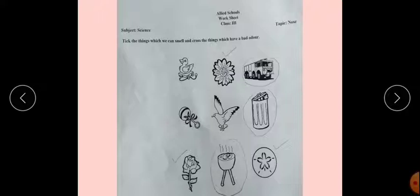Cross the things which have a bad odor. You have to tick good smells and cross bad smells. Dustbin also has bad smell - you have to cross it. Here you have to cross, not circle.